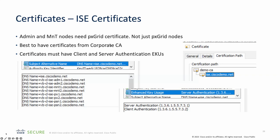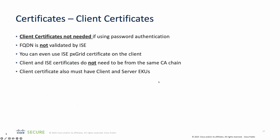It's easiest to have certificates from a corporate CA. Since the PXGrid service can both subscribe and publish information, certificates need to have both server and client authentication EKUs enabled. When using password authentication, client certificates are not needed. ISE does not validate the FQDN of the client certificate — it simply validates that the certificate is trusted. If you want to test quickly, you can take the PXGrid certificate from ISE, install it on the client, and that will work just fine.